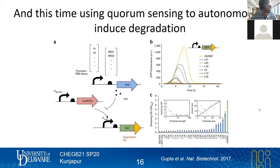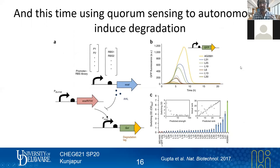I'll briefly mention one other way that this was tweaked to further improve the system, as well as to add some interesting elements. There are two things going on here that rely on how cells perform quorum sensing. Cells have this ability to essentially know how many of each other there are and to modulate behavior as a collective.